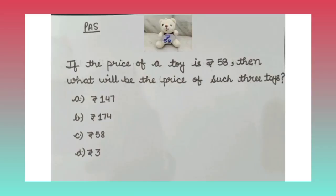Now, the question for pass. If the price of a toy is rupees 58, then what will be the price of such three toys? Option A, rupees 147, B, rupees 174, C, rupees 58, D, rupees 3.